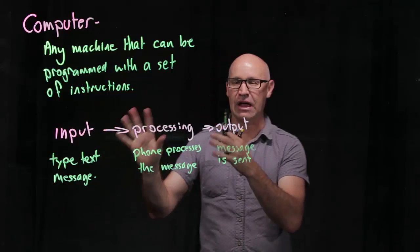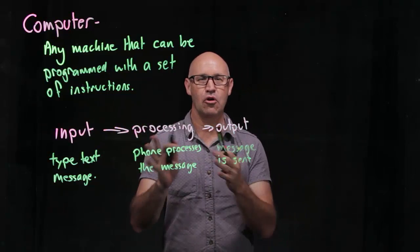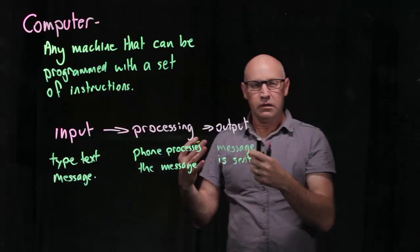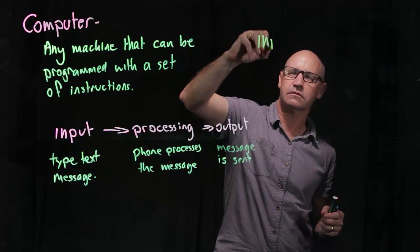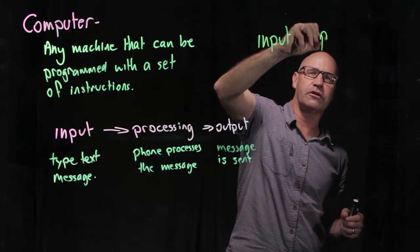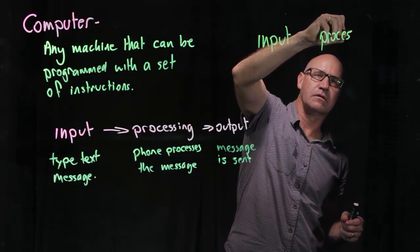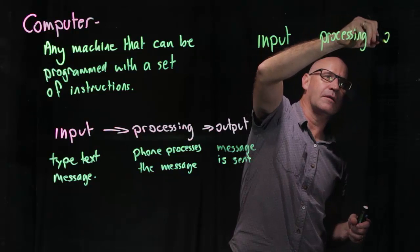So let's look at that model with a more complex computer. A computer is essentially just that. We've got input, we've got processing, and we've got output.